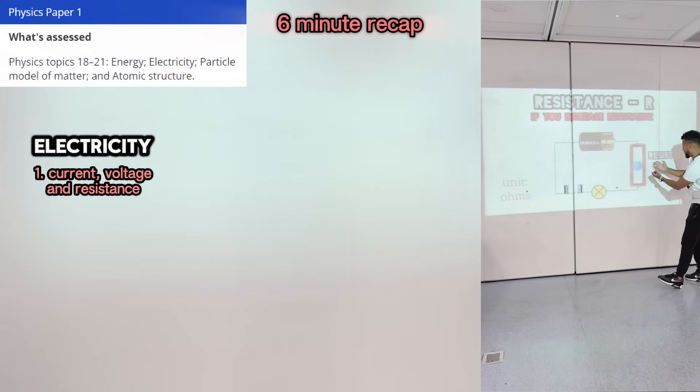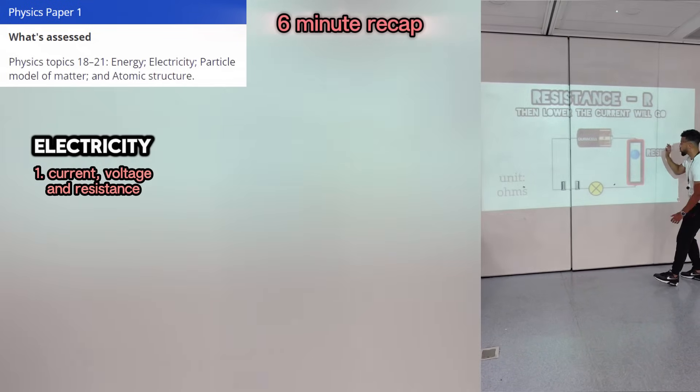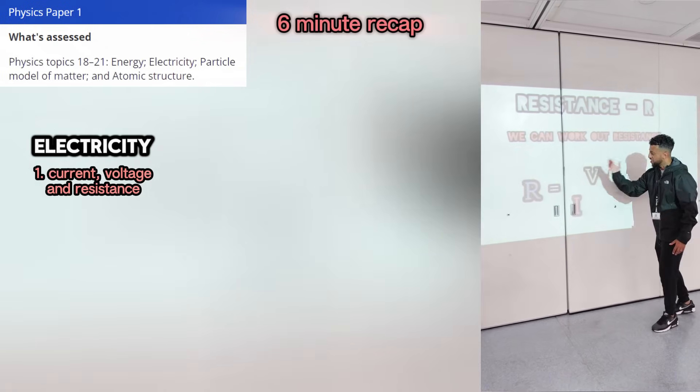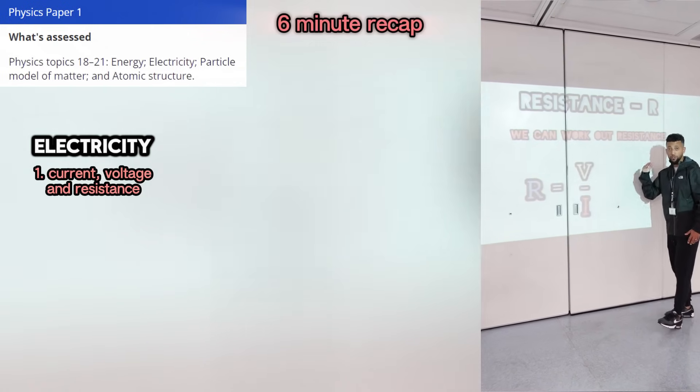The third word's resistance. It reduces electron flow. If you increase resistance, then lower the current will go. Now we can work out resistance, we just put this one in front. Resistance then equals the voltage divided by current.